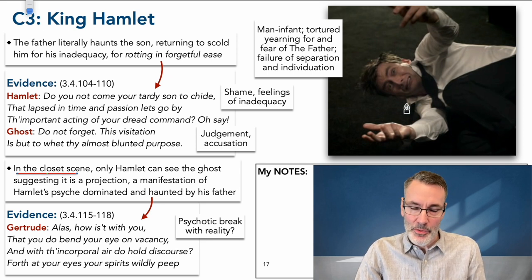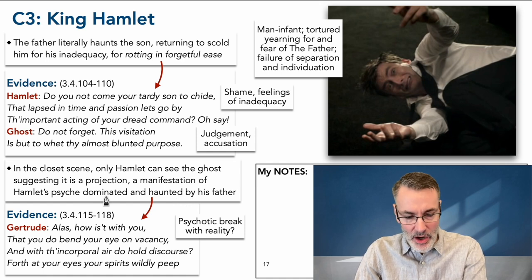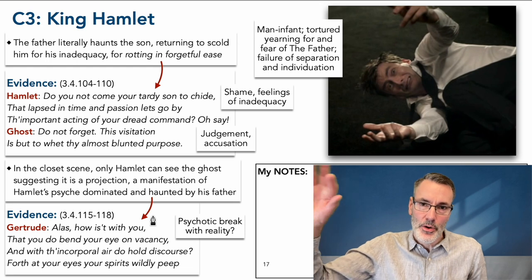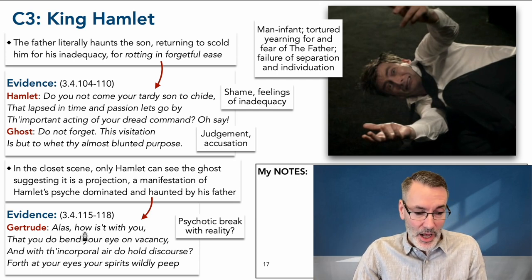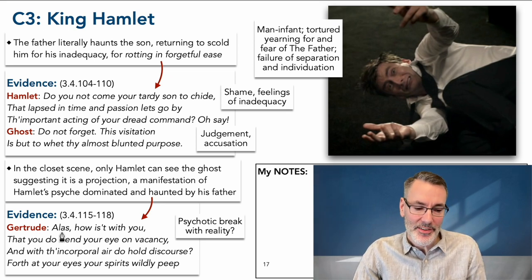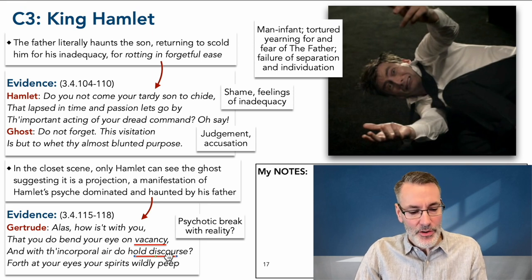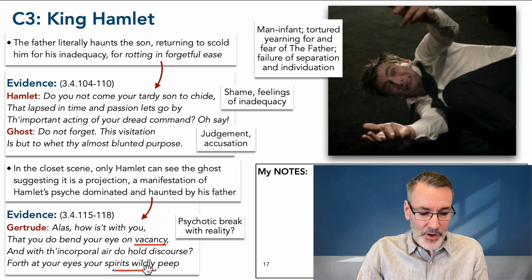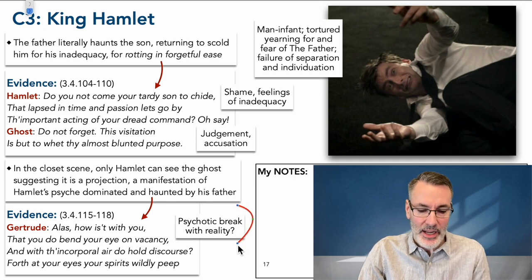In the closet scene, only Hamlet can see the ghost, suggesting it is a projection — a manifestation of Hamlet's psyche dominated and haunted by his father. At the very beginning, when the ghost comes, everybody else can see it — Horatio and the guards — suggesting it's a real ghost. But in this closet scene, Shakespeare changes things up; Gertrude can't see the ghost. She says: 'Alas, how is it with you, Hamlet? What's going on that you do bend your eye on vacancy, and with the incorporeal air do hold discourse? Forth at your eyes your spirits wildly peep.' She can't see the ghost — she thinks he's looking at nothing.